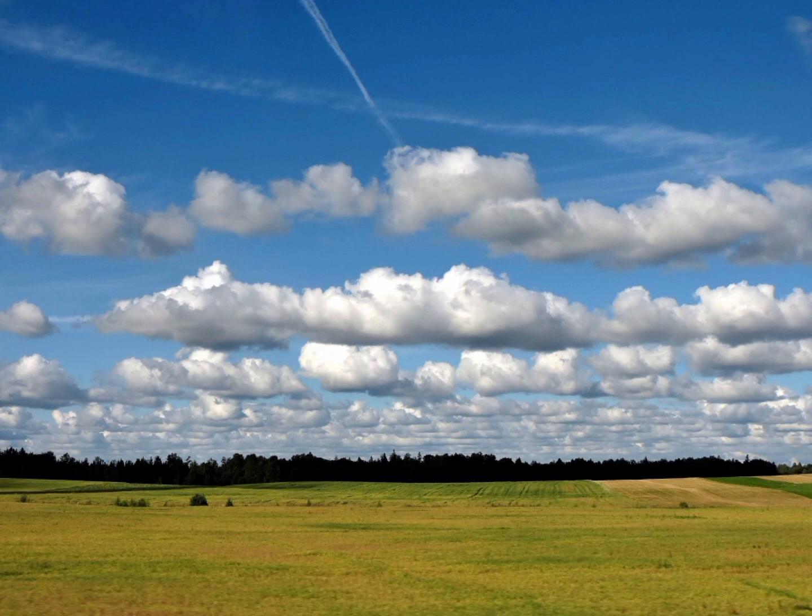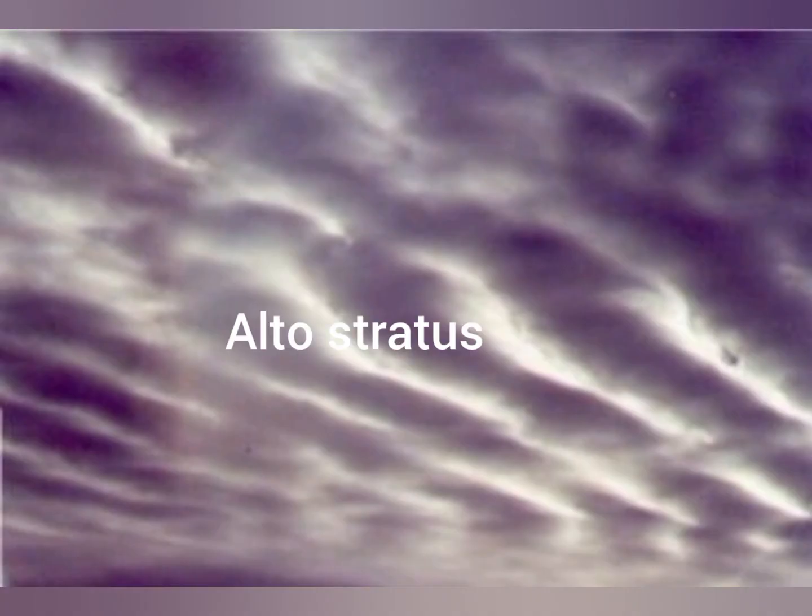Another type of middle cloud is the altostratus. These clouds are in sheet form and are mostly grayish or bluish in color. They often contain lots of moisture and can even cause widespread rainfall that may be continuous over a longer period of time.